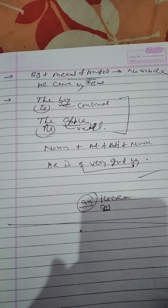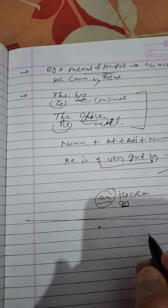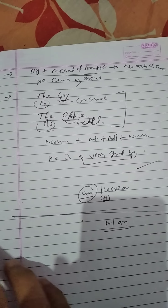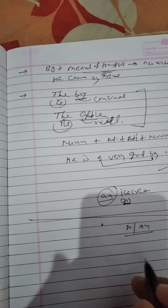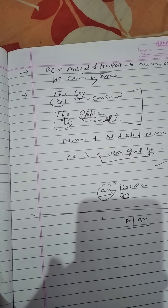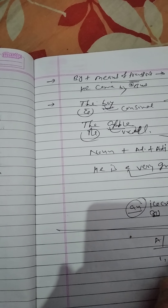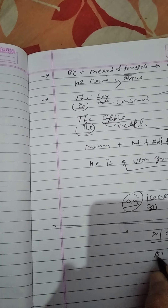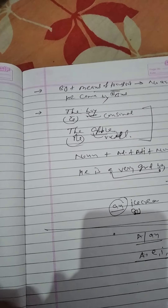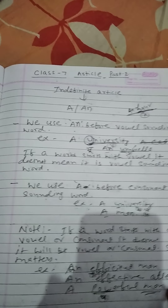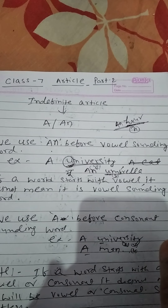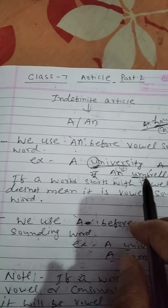Good morning students. Today we will discuss the use of indefinite articles A and AN — where to use A and where to use AN. Its use depends upon the sounding of the word. If the word starts with a vowel sound — A, E, I, O, U — we use AN, and if the word starts with a consonant sound, we use A.